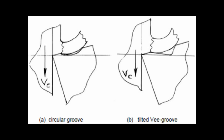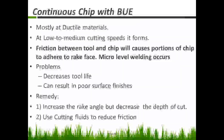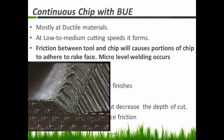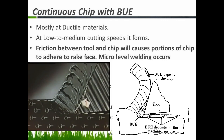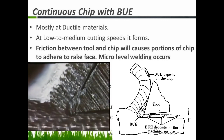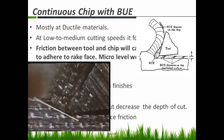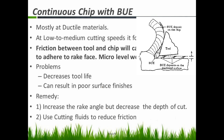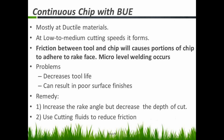Next is continuous chips with built-up edge. It is mostly formed in ductile materials at low to medium cutting speed. The friction between the tool and chip causes a portion of the chip to adhere to the rake face — this is a micro-level welding at the tool-chip interface. Due to this micro-level welding it will reduce the tool life and also spoil the surface finish of the workpiece. It can be eliminated by increasing the rake angle, decreasing the depth of cut, and using proper cutting fluids.